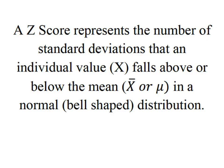So by definition a z-score, sometimes referred to as a standard score, simply represents the number of standard deviations that an individual value of x falls either above or below the mean when we have normal bell-shaped or symmetrical distribution.